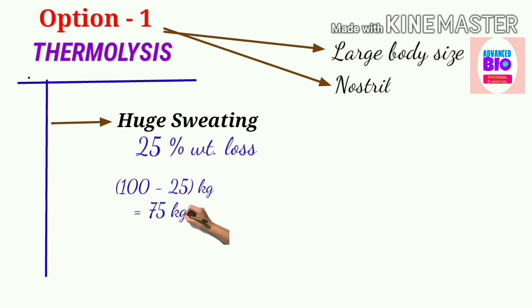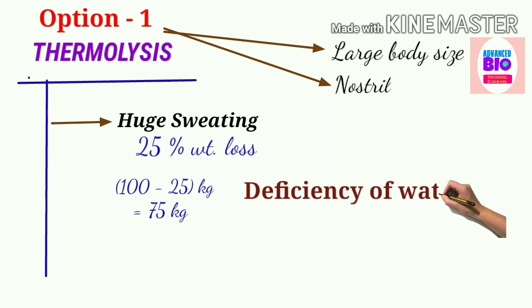Now see one thing: this sweating creates a new problem for the camels—that is deficiency of water. I repeat: deficiency of water. So they need to conserve the water in their bodies. Now a question arises in your mind: what are their adaptations to conserve the water inside their bodies? Well, I am explaining it.